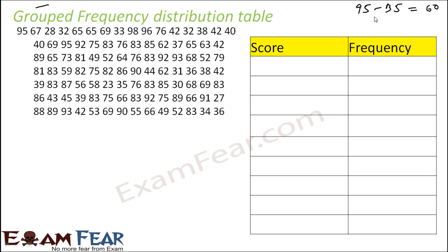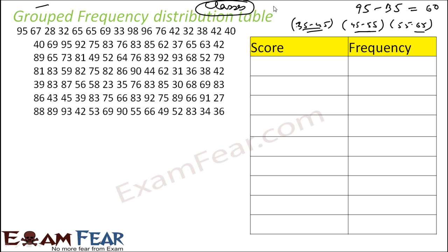For example, you can say 35 to 45 is one group, and 55 to 65 is another group. Any score in that range goes into one entry, minimizing the number of rows. To represent very large amounts of data, we condense the scores into groups. These groups are called classes, or class intervals. Their size is called class size or class width — for example, 45 minus 35 equals 10, so the class size is 10. We also have a lower limit and an upper limit for each class.